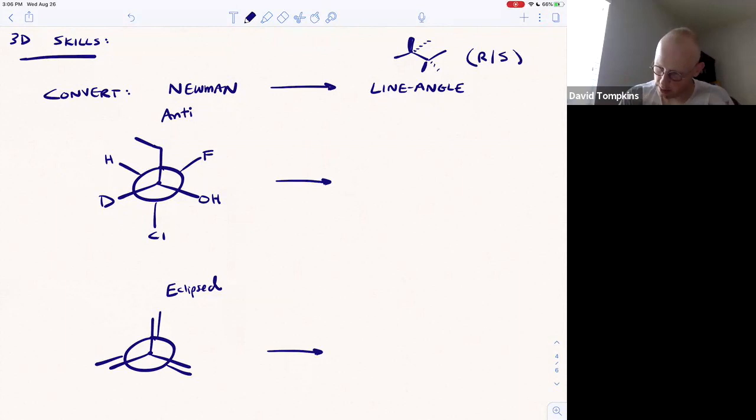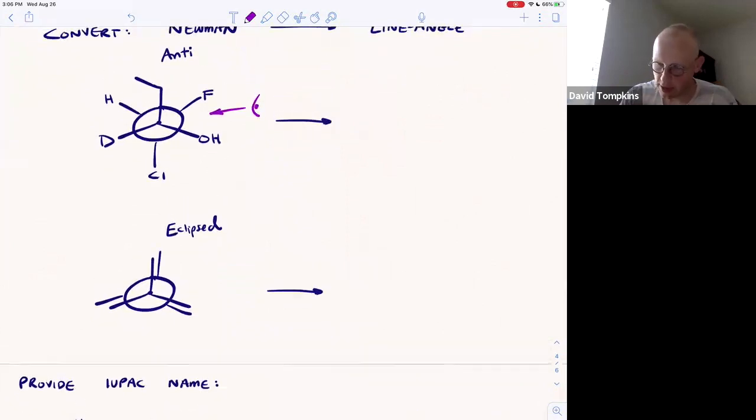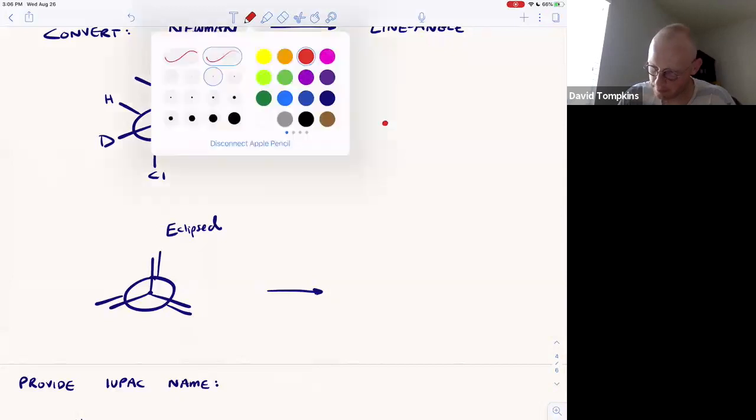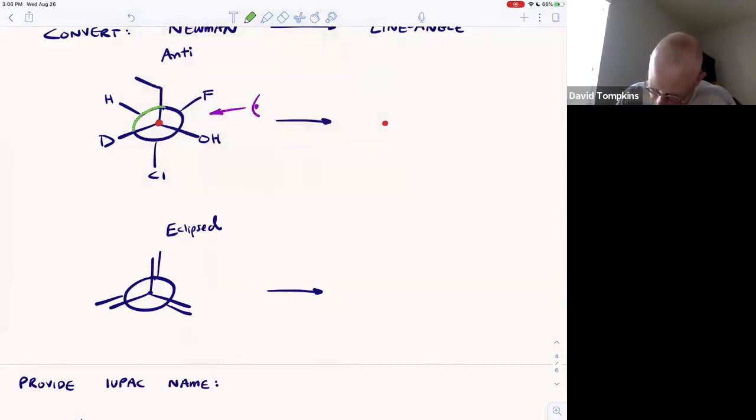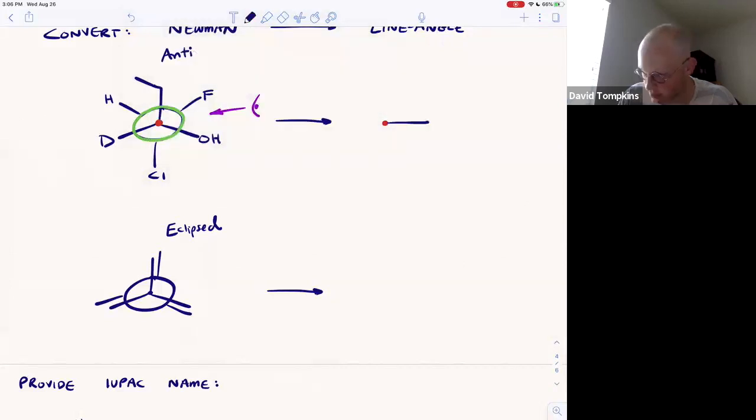Imagine you are this eyeball sitting in the plane of the page staring at this carbon-carbon bond. The carbon coming out of the page or in front is on the left side of the viewer. The carbon going into the page or behind the bond, the one we can't see represented by this circle, is to the right of the viewer.